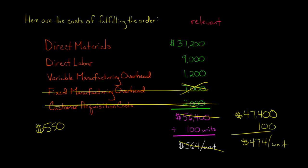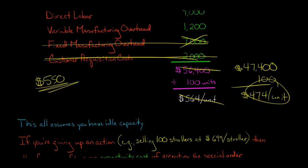Now, let's go back to our price. So it costs us $474 per stroller to fill this order. And they're offering us $550 per stroller. So the incremental revenue that we get from accepting this offer exceeds the incremental cost.